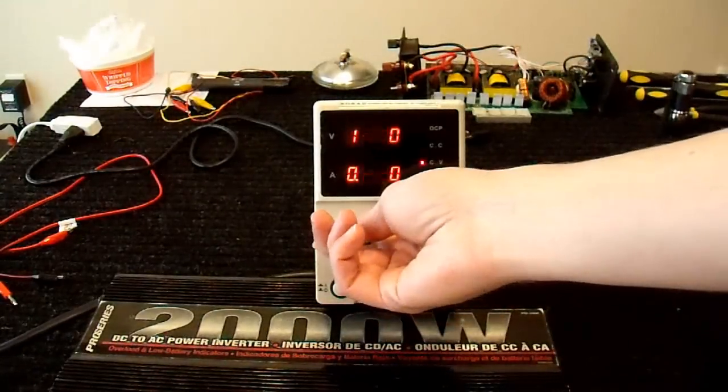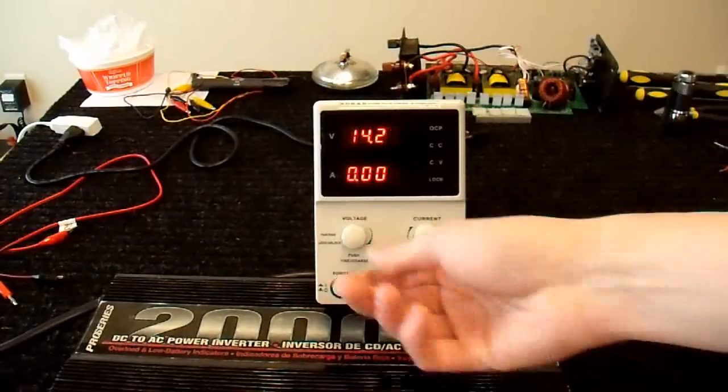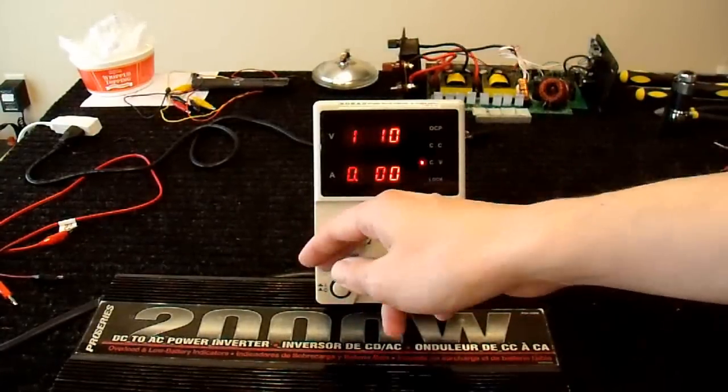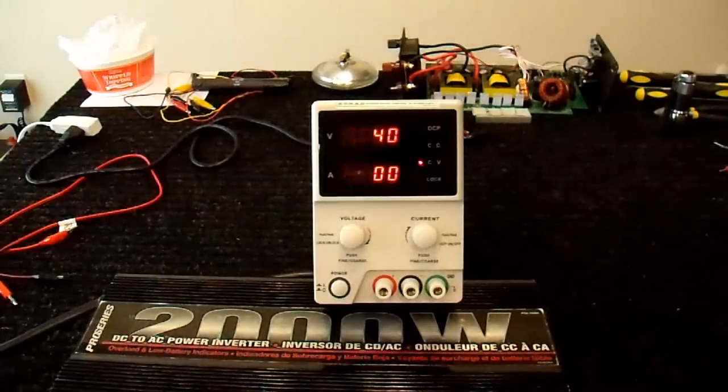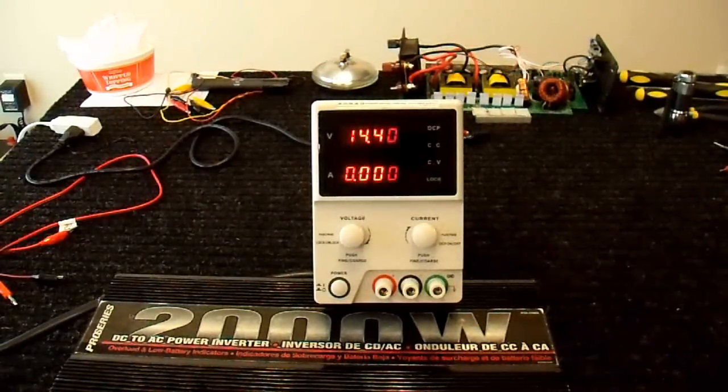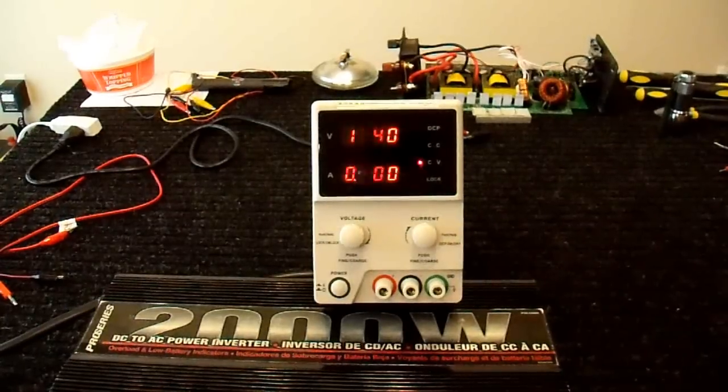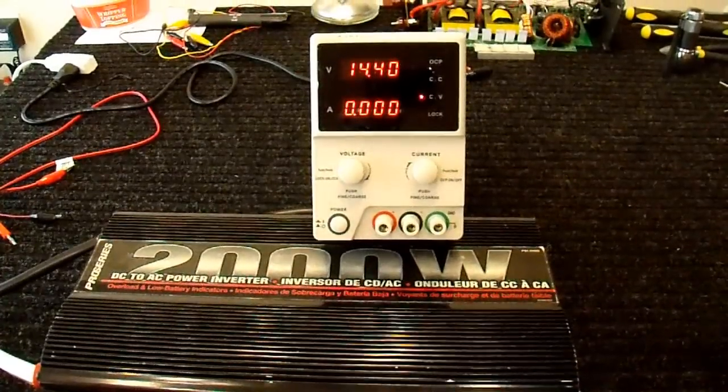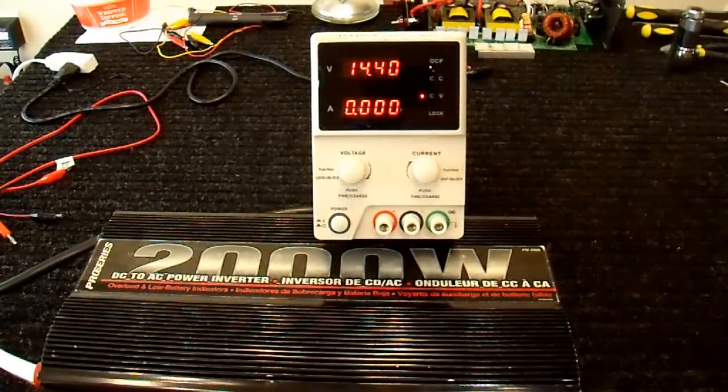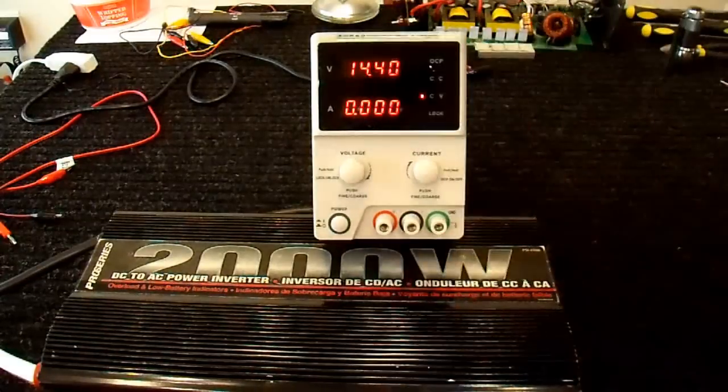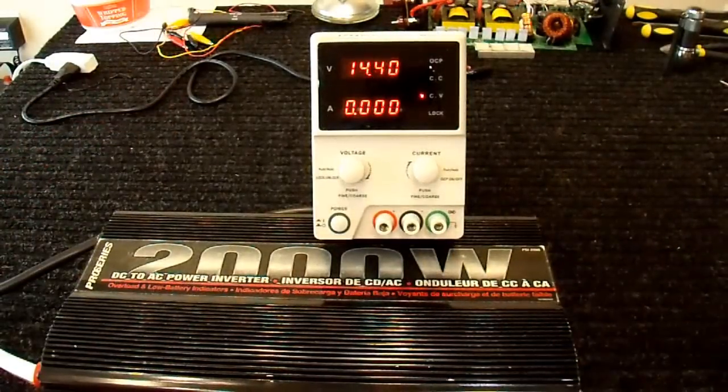Turn it on here. I can adjust the voltage up and down to as low or high as I want. So I'm just going to set this to 14.4 volts. It may look like it's flickering on camera. It is not flickering in real life, but 14.4 volts because that is approximately what a car alternator outputs.